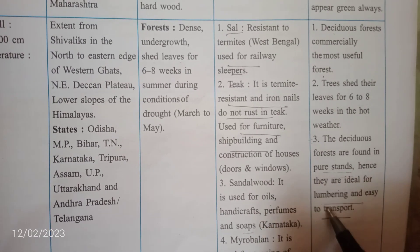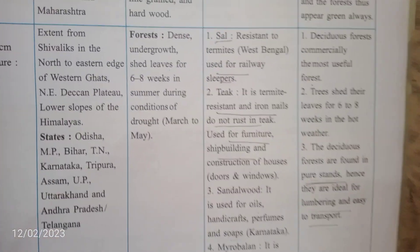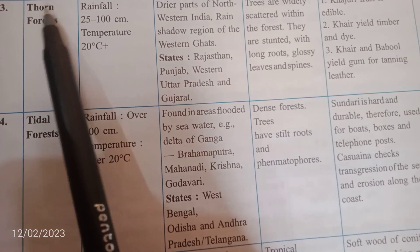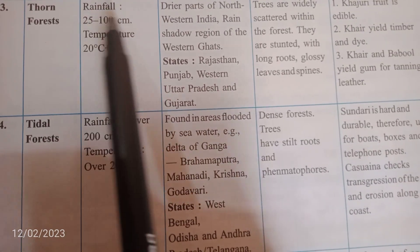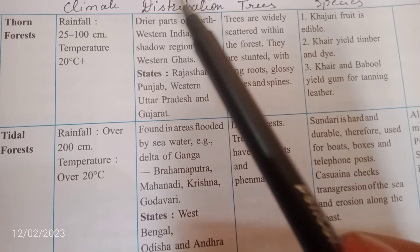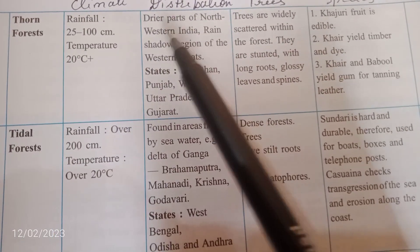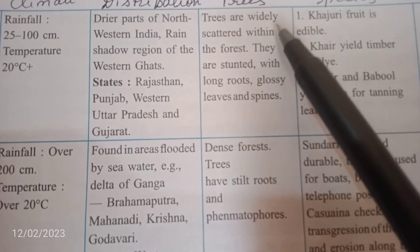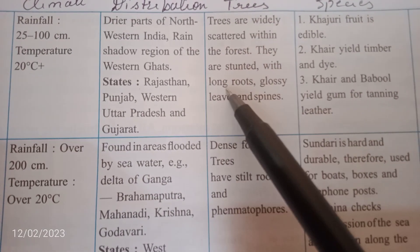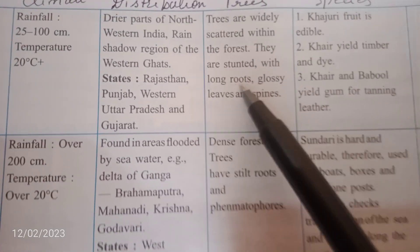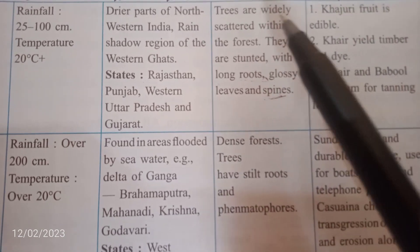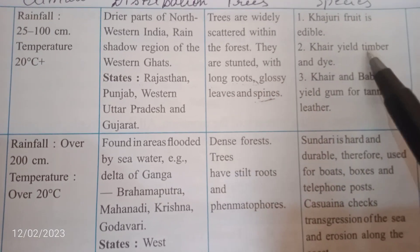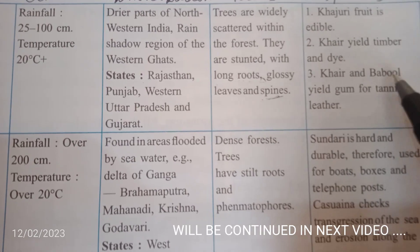The third type is thorny forest — the term itself suggests a desert-like environment. Rainfall is over 25 to 100 centimeters and temperature is above 20 degrees Celsius. Distribution includes the dry parts of northwestern India and rain shadow regions of the Western Ghats; states include Rajasthan, Punjab, western Uttar Pradesh, and Gujarat. Trees are widely scattered, stunted, with long roots to absorb water, glossy leaves, and spines to store water. They are scattered because there are not many trees. Species include Khejri, whose fruit is edible; Kagra, which yields dye; and Babul, which yields gum used for tanning leather.